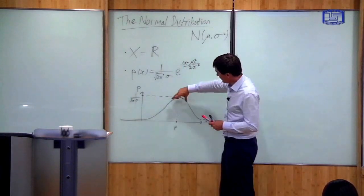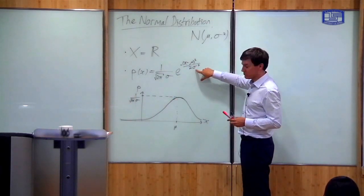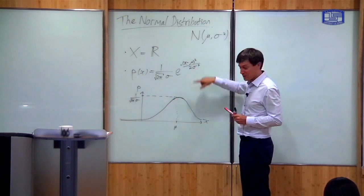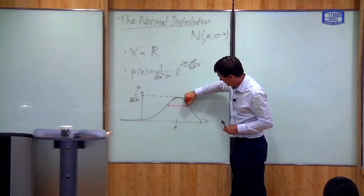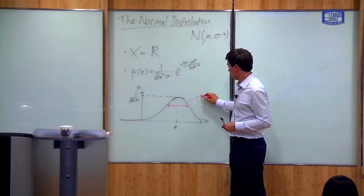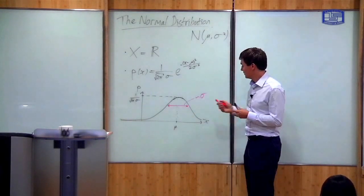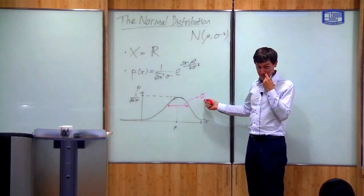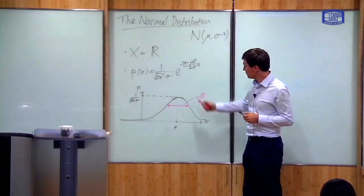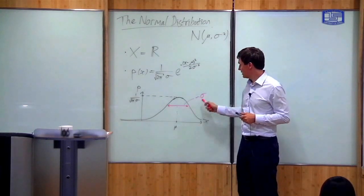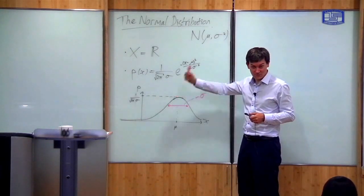The rate at which this distribution decays is governed by the parameter σ², so the width is related to the value of σ. This is the normal distribution: μ tells you where the center is, σ tells you how wide the distribution is.